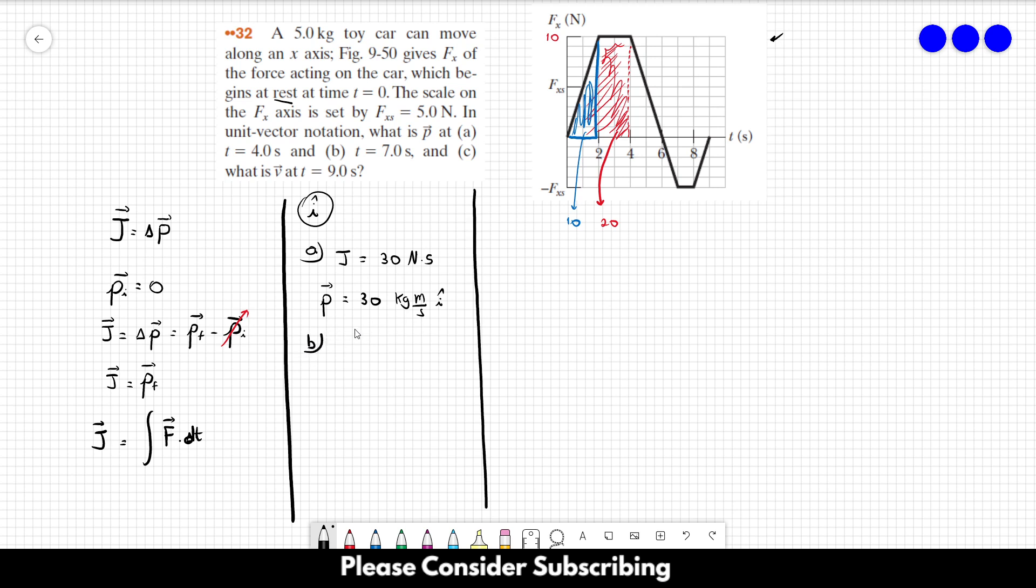For letter B, we need to add this area here, this area here, and this one over there. Okay, so this area is, of course, 10 because it's the same as the blue one. And this area over here is, let's see, it's 1 times minus 5 divided by 2. So that's going to be minus 2.5.